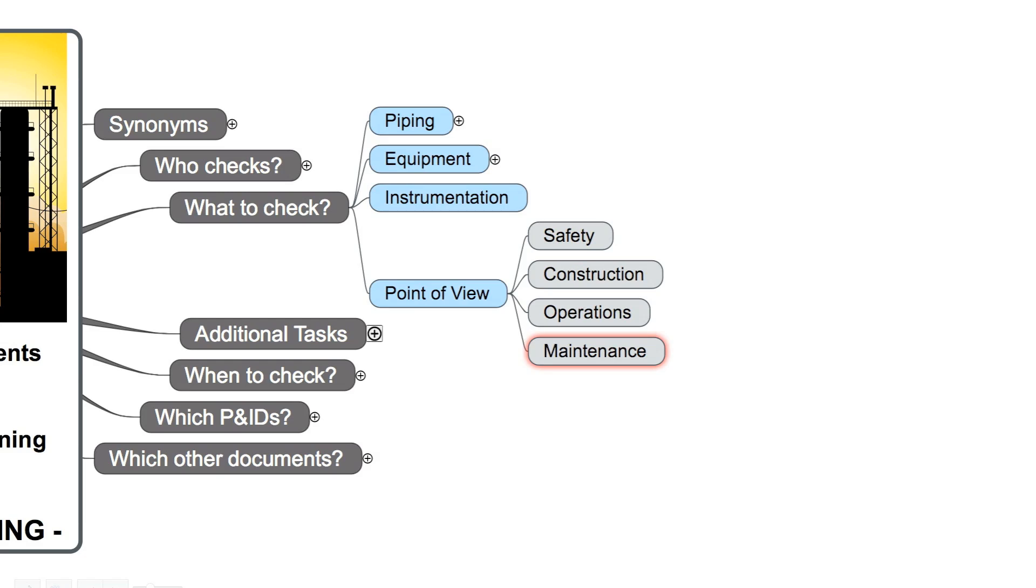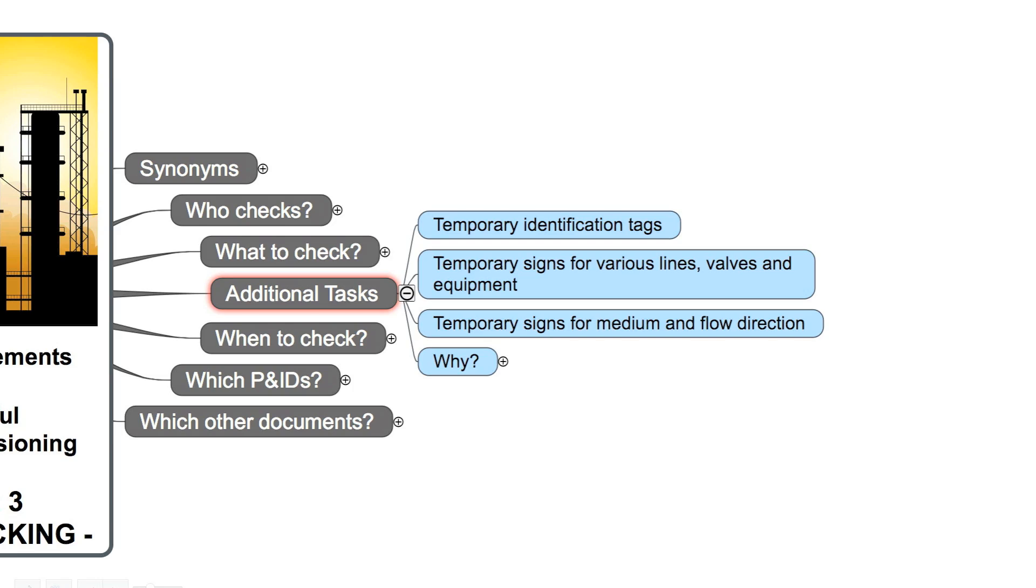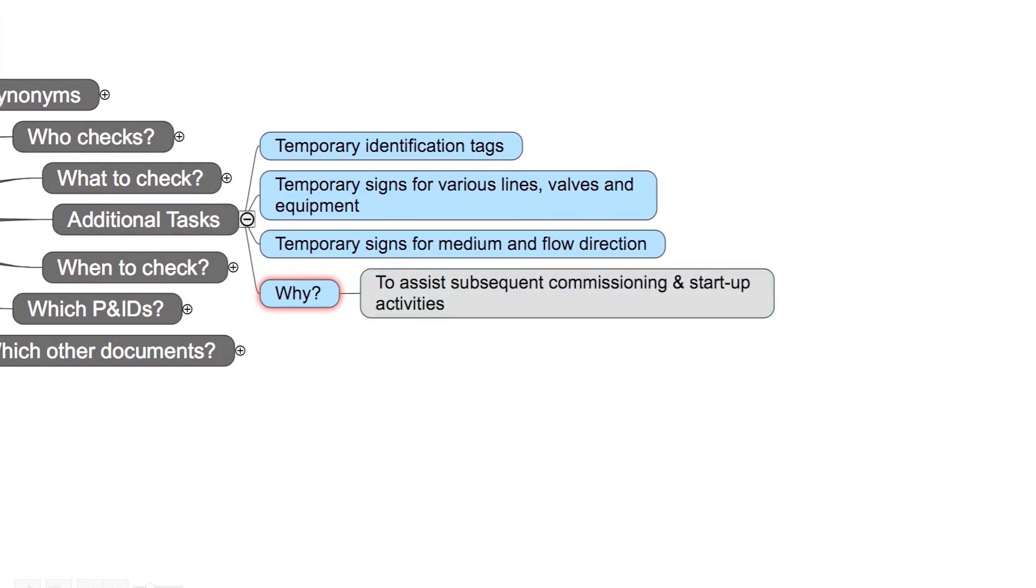It's a good idea to perform the following additional tasks: attach temporary identification tags, attach temporary signs for various lines, valves, and equipment, or put on temporary signs for medium and flow direction. Why is this a good idea? Because this makes it easier to perform the future commissioning and start-up activities.